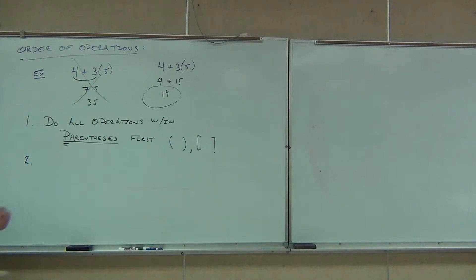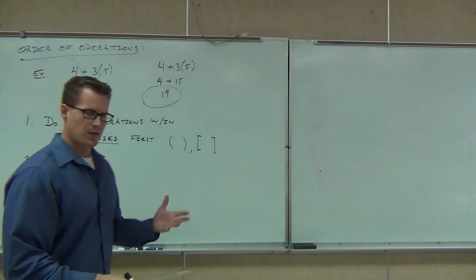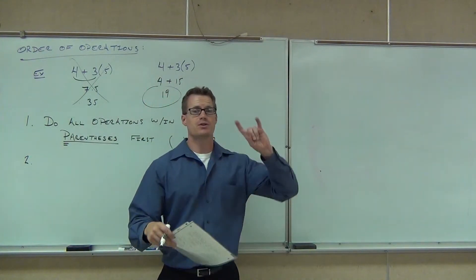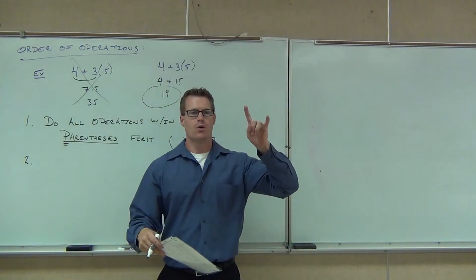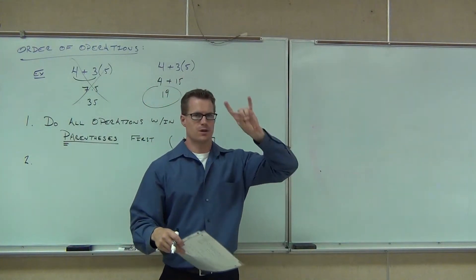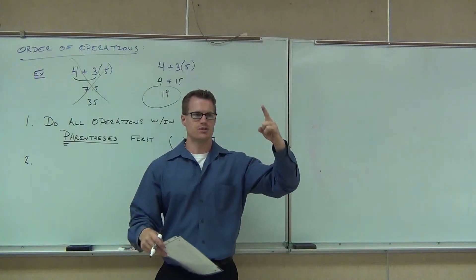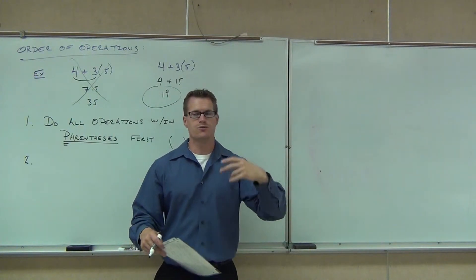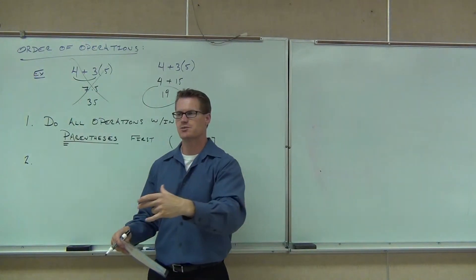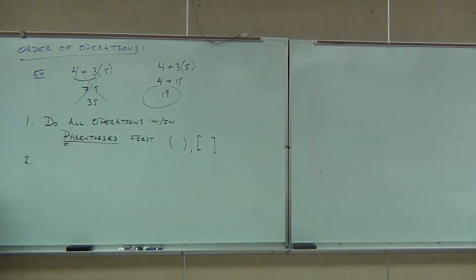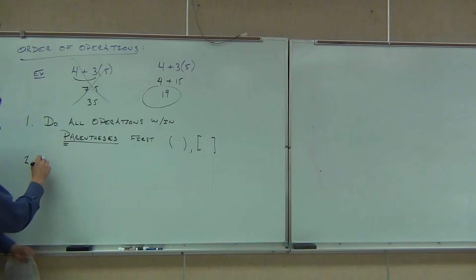So first order of business: we deal with our parentheses first and take care of all those operations. Then we move on to number two. We're going to look for any exponents — the things we just covered — and evaluate any exponents right then. So parentheses come first, but right after that we're going to simplify any exponents.